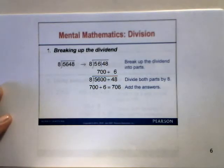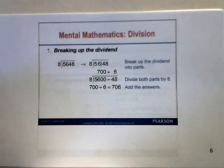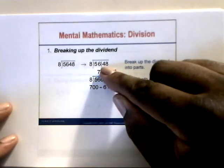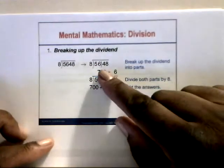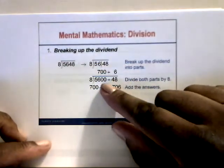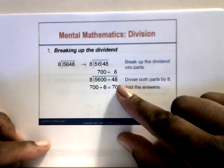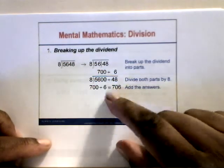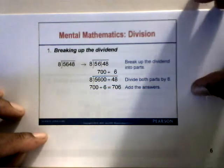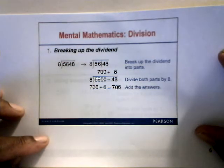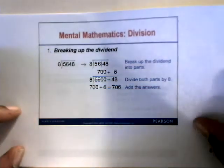For division mental mathematics, one technique is breaking up the dividend. For 5,648 divided by 8, break the dividend into 5,600 and 48. Divide 5,600 by 8 to get 700, and divide 48 by 8 to get 6. Then 700 plus 6 equals 706, which is the answer to 5,648 divided by 8.